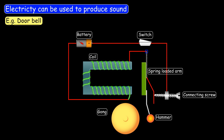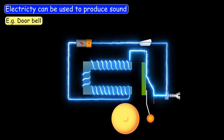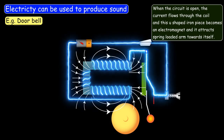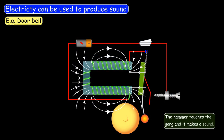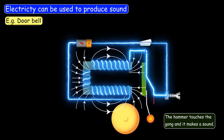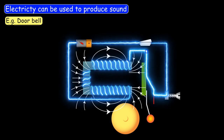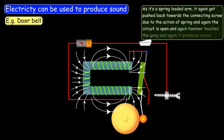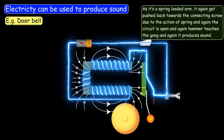Now let's see what happens when the circuit is closed, or when we switch on the bell. When the switch is turned on, current flows through the coil and the U-shaped iron piece becomes an electromagnet, which attracts the spring-loaded arm towards itself. The hammer then touches the gong and produces a sound. But the circuit is broken right away — as the spring-loaded arm is attracted towards the electromagnet, contact with the connecting screw breaks, and as a result the circuit becomes open. But as it's a spring-loaded arm, it gets pushed back towards the connecting screw due to the action of the spring.